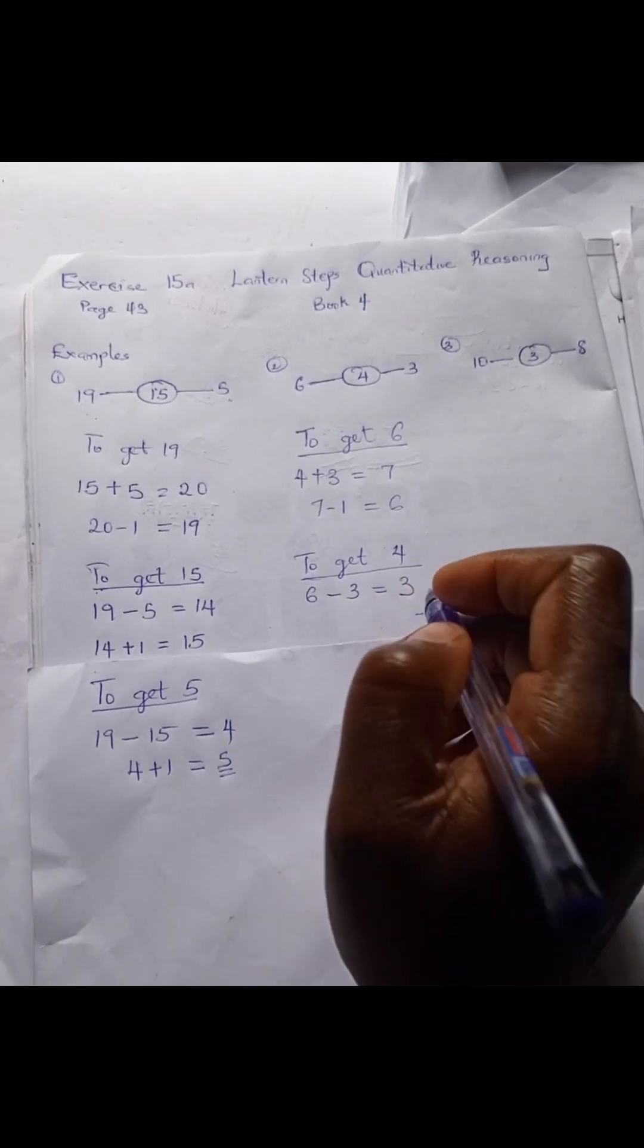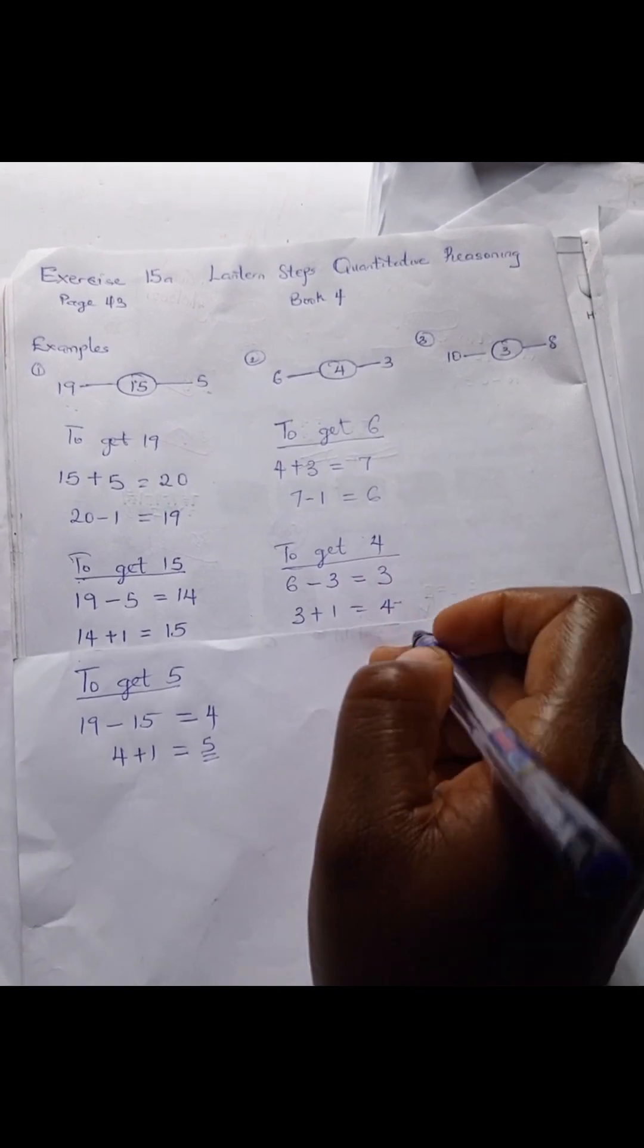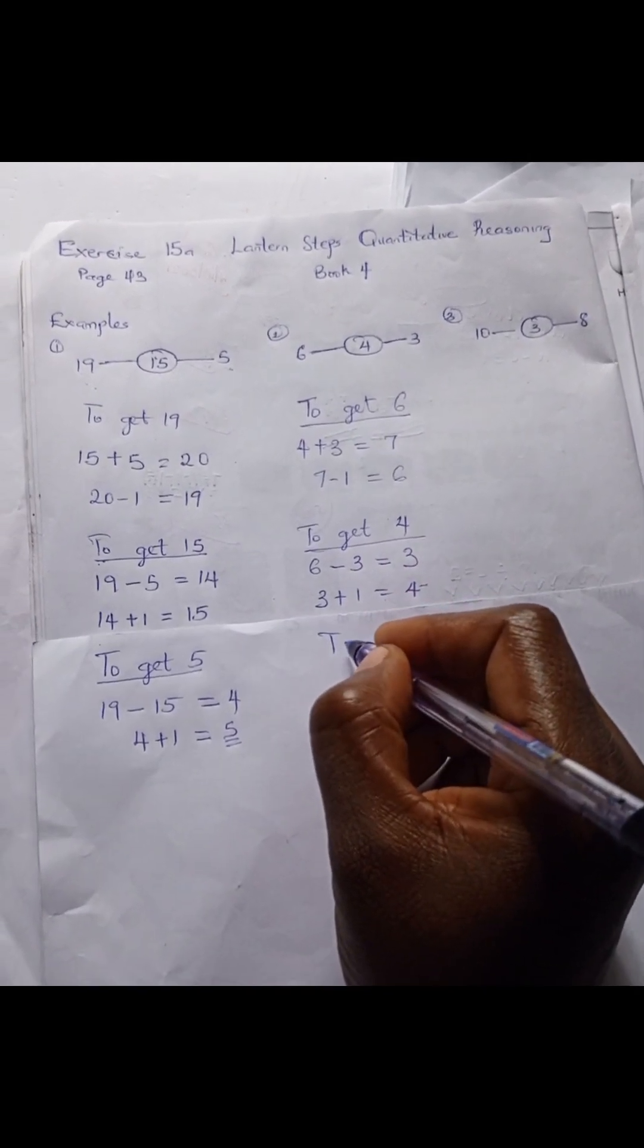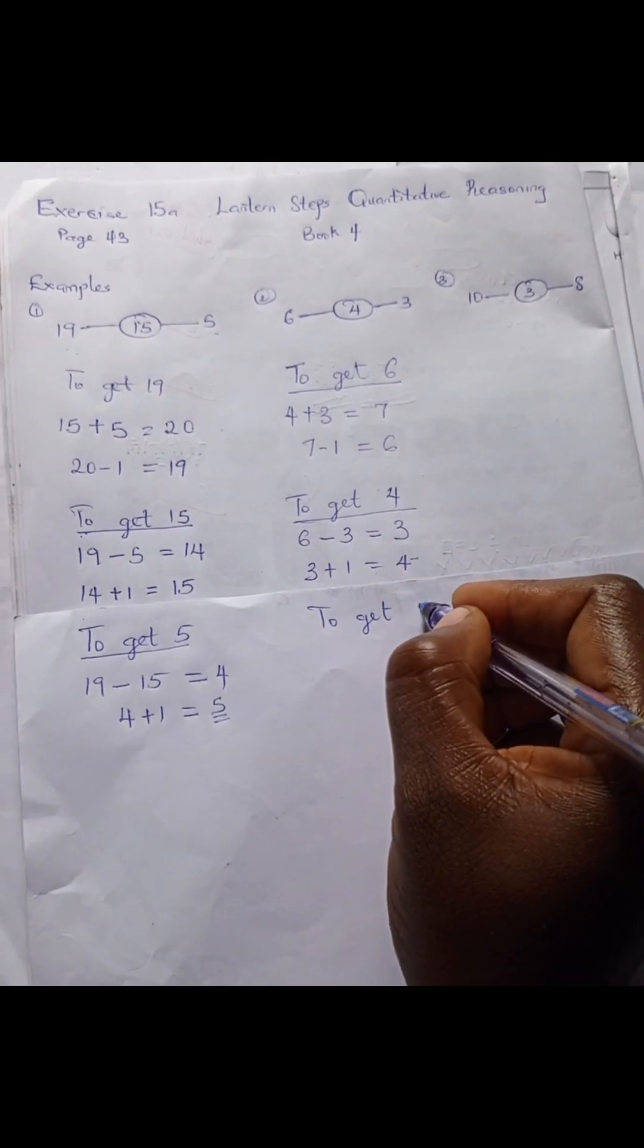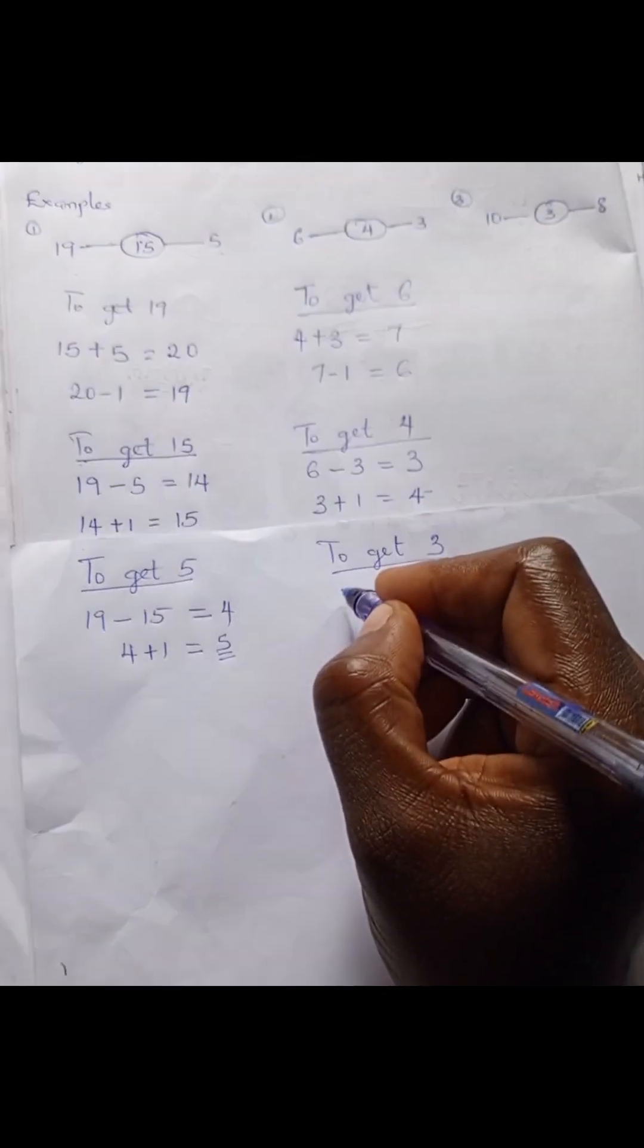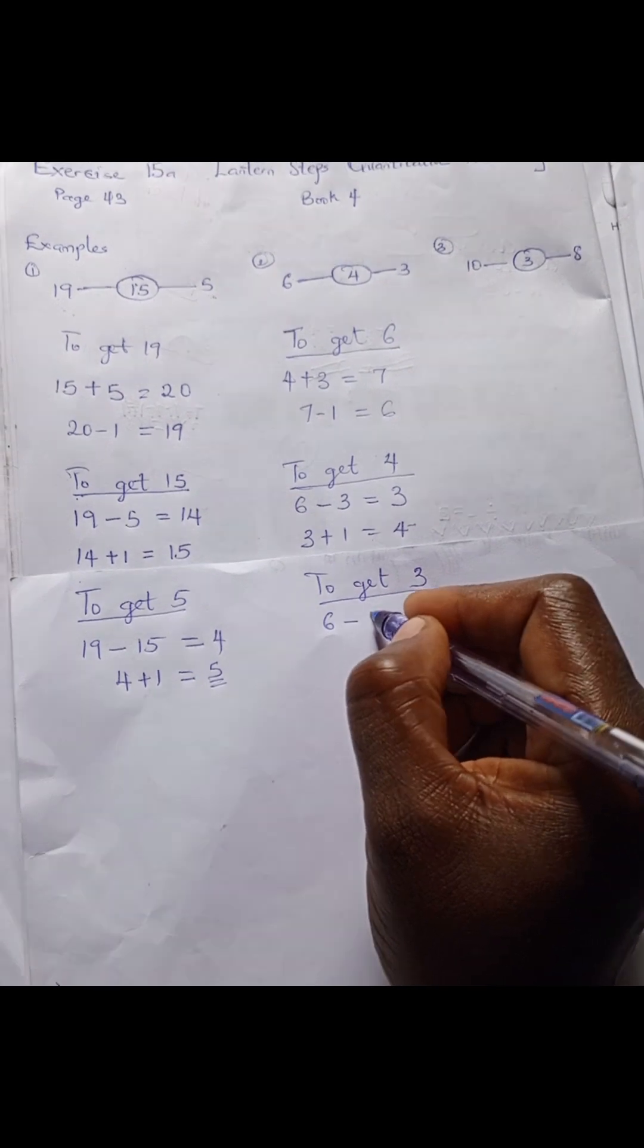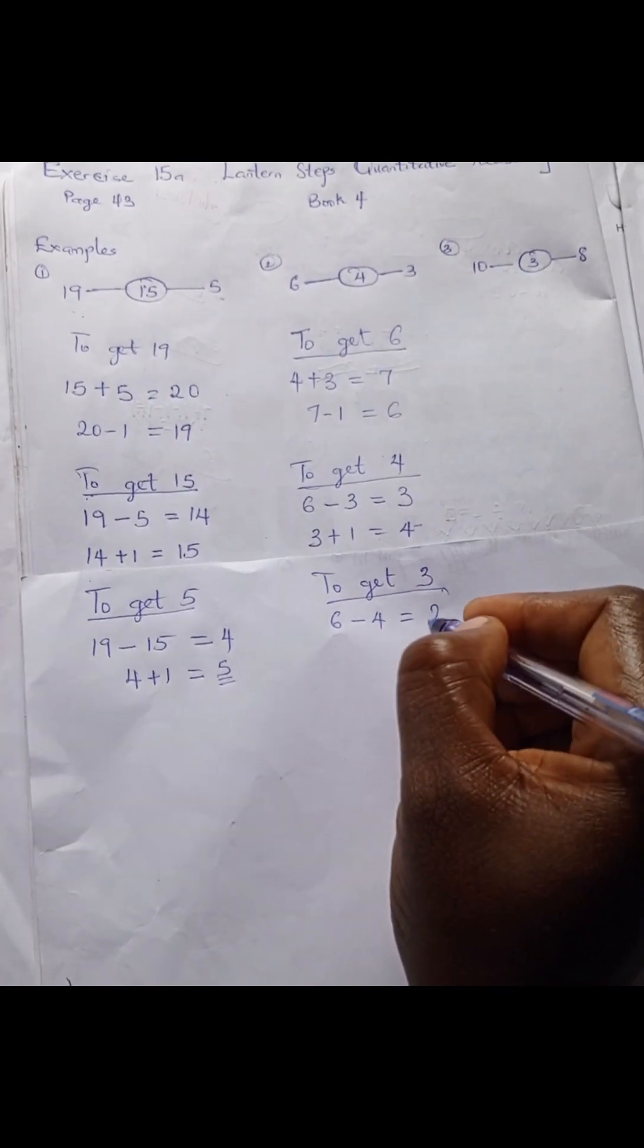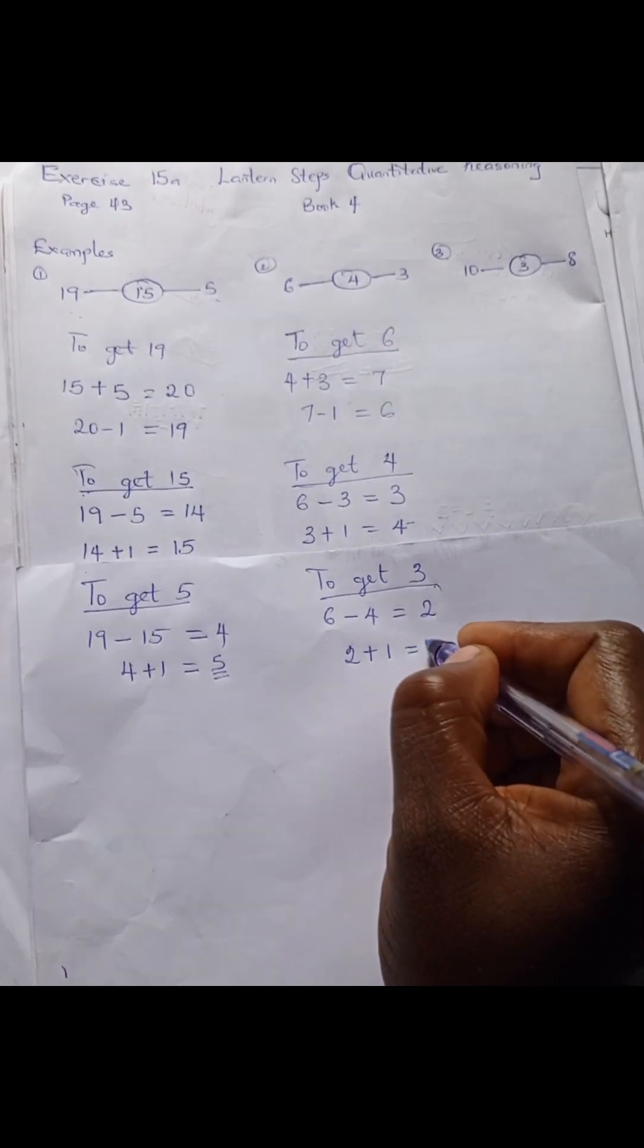To get 3, we have 6 minus 4. 6 minus 4 is 2. 2 plus 1 is 3.